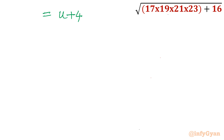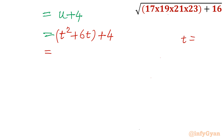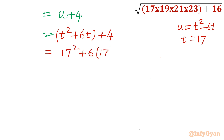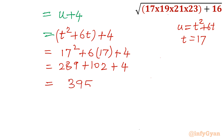Now put back the values of u and t. Since u equals t squared plus 6t and t equals 17, we get: 17 squared plus 6 times 17 plus 4, which equals 289 plus 102 plus 4. Taking the sum, we get 395, which is our answer. I hope you liked this video — thank you so much for watching. Do not forget to like, share, and subscribe. Bye till next video.